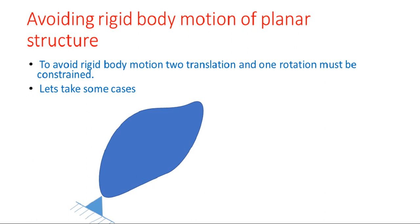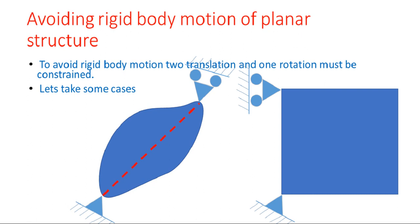But still there is one motion left — rotation. The structure can still rotate about the pin point. To avoid that rotation, let's apply a roller joint with an orientation offset from the axis shown. We'll cover the reason for the offset in more detail soon. Now we have a simple rectangular box subjected to pin and roller joints such that all motions are constrained. Please pause and think about why its rigid body motion is now constrained.